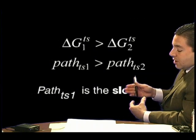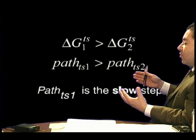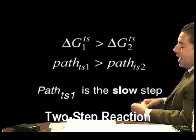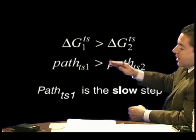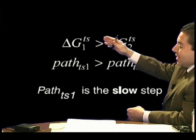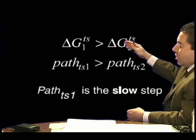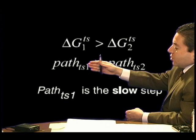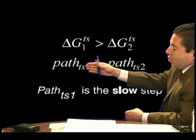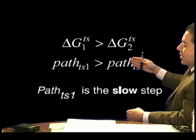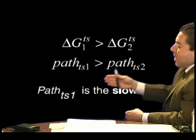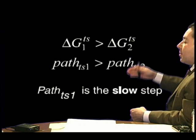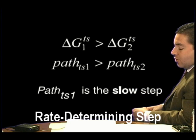One of the interesting things is that if this reaction energy profile reflects a two-step reaction, we can see that the delta G1 of transition is greater than delta G2 of transition. That means that the first step has a longer time than the second step, and the transition state 1 is the slow step in this two-step reaction, or the rate-determining step.